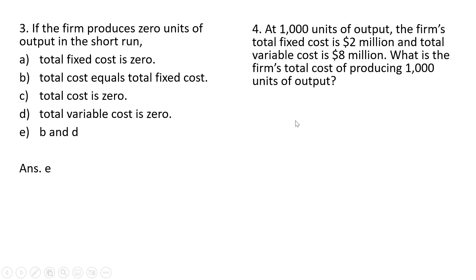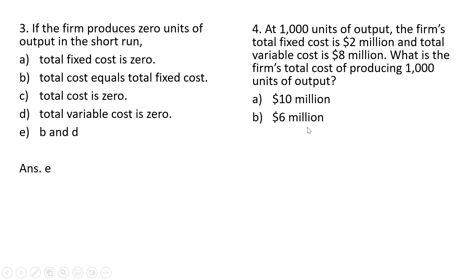Number four: at 1,000 units of output, the firm's total fixed cost is $2,000,000 and total variable cost is $8,000,000. What is the firm's total cost of producing 1,000 units of output? It's going to be $10,000,000 — just $8,000,000 plus $2,000,000. Answer choices B, C, and D are incorrect. Answer A is the correct answer.